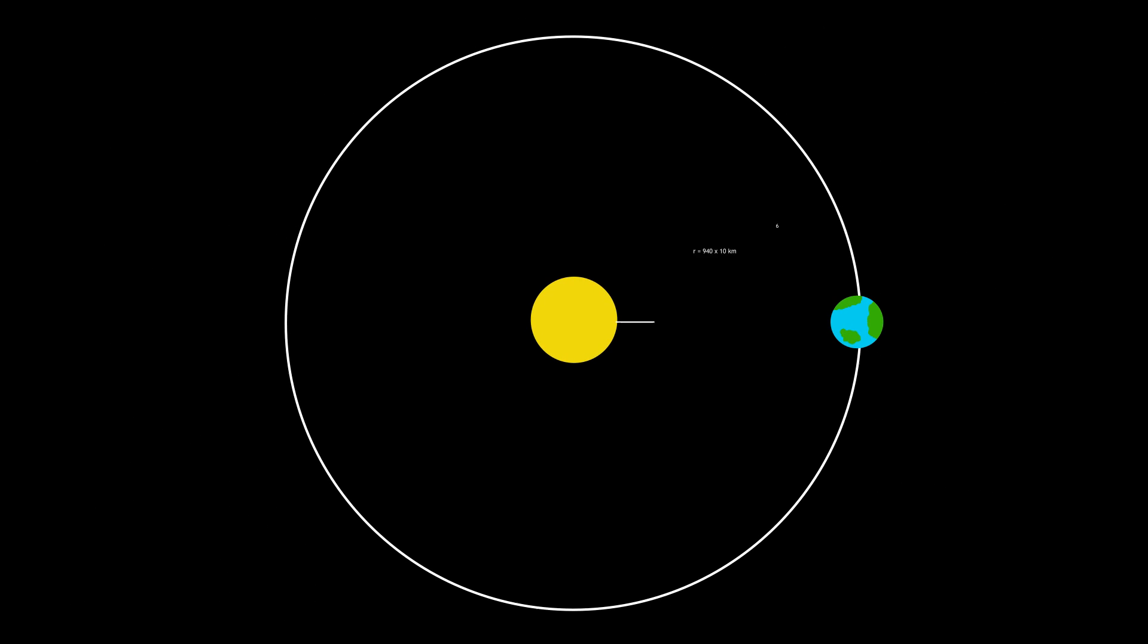Now, we know how long the Earth takes to orbit the Sun. One year, or 365.25 days, so we can calculate its orbital radius, which turns out to be just over 940 million kilometers.